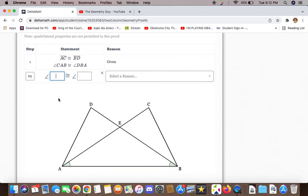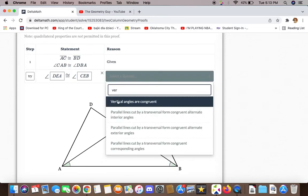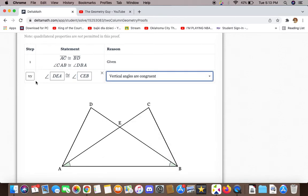So the first thing we can say is DEA and CEB are congruent to each other because the vertical angles are congruent.